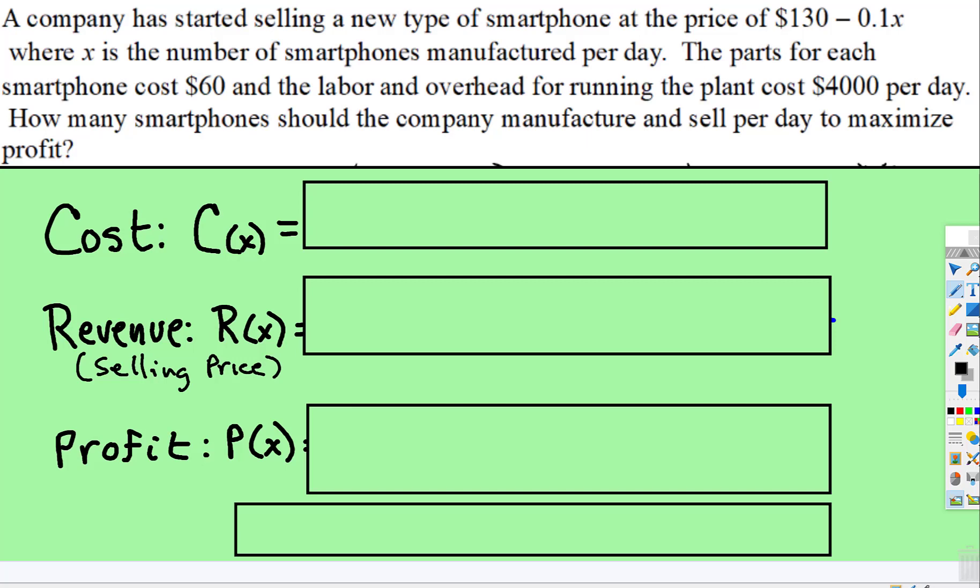Okay, another optimization problem. This time it's a cost-profit revenue problem. Generally the most difficult part is getting it set up correctly, which is the case of all optimization problems, because finding the derivative and factoring is pretty easy.